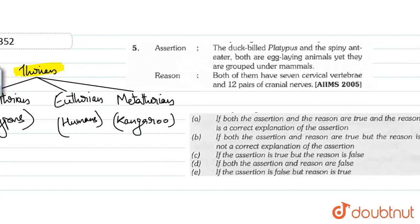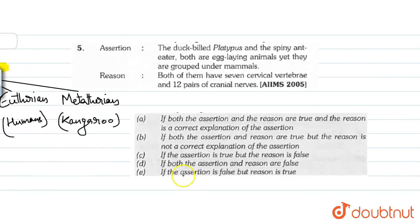I solve a question, an assertion and reason-based question. Our assertion is that the duck-billed platypus and the spiny anteater both are egg-laying animals yet they are grouped under mammals.